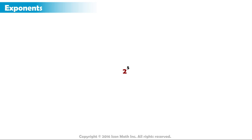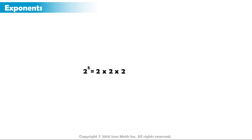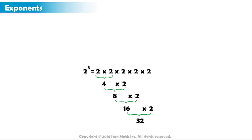Take the expression 2 to the power of 5. The base is 2. The exponent is 5. So we must multiply 2 by itself 5 times: 2 times 2 times 2 times 2 times 2. 2 times 2 equals 4, times 2 equals 8, times 2 equals 16, times 2 equals 32. The result is 32.